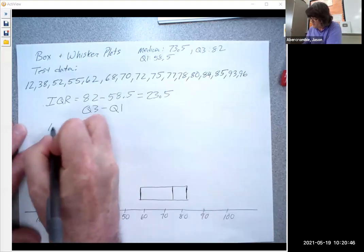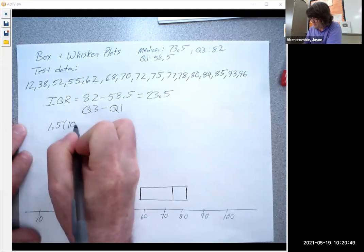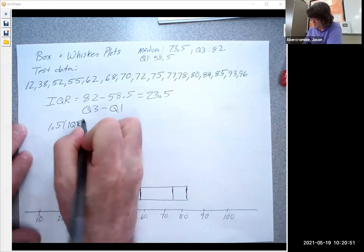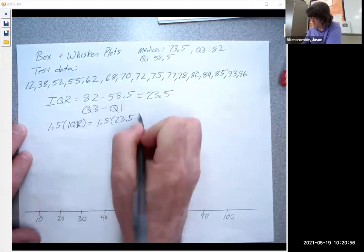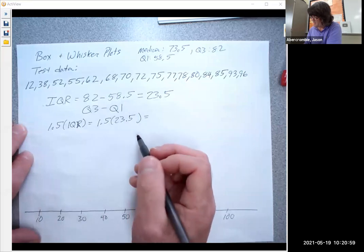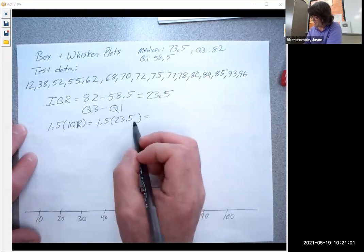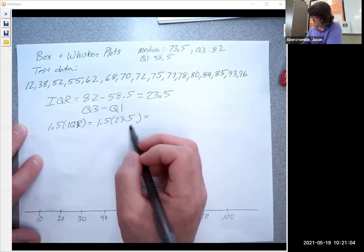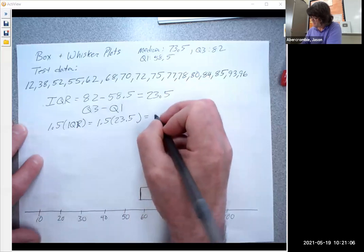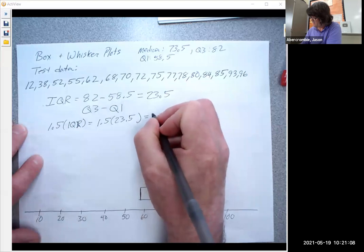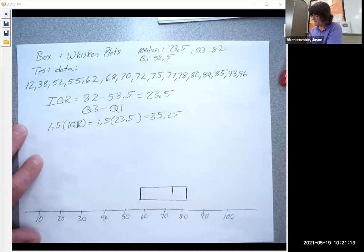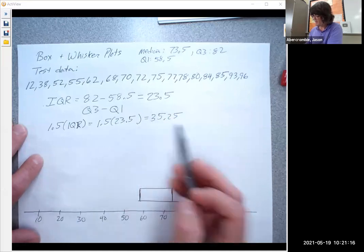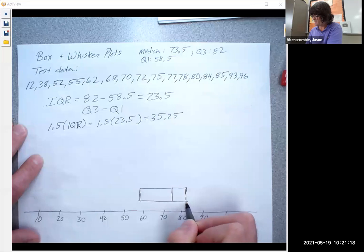And so 1.5 times the interquartile range is 1.5 times 23.5. And so this is going to be, add 11.75. So we'll have 35 and a quarter. And so this is how much we're going to add to that quartile and subtract from this quartile to see what my cutoff ranges are.